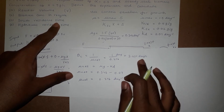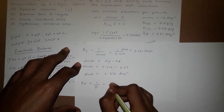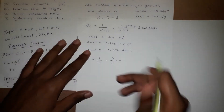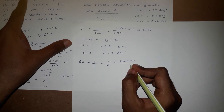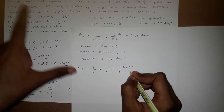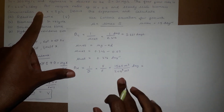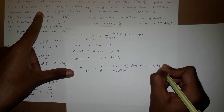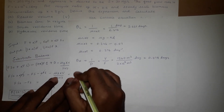The hydraulic residence time θH = V / F. With V = 1560 m³ = 1.56 × 10^6 litres and F = 2 × 10^7 litres per day: θH = 1.56 × 10^6 / 2 × 10^7 = 0.078 days.